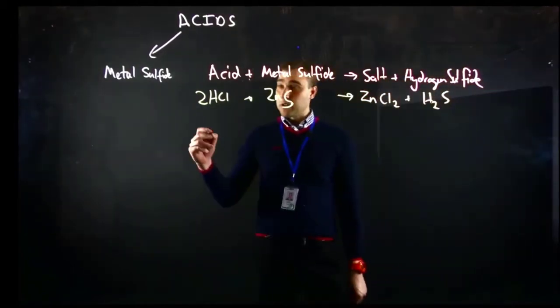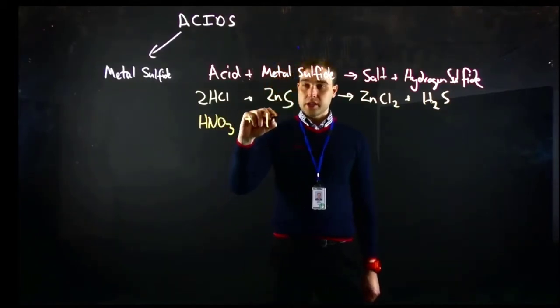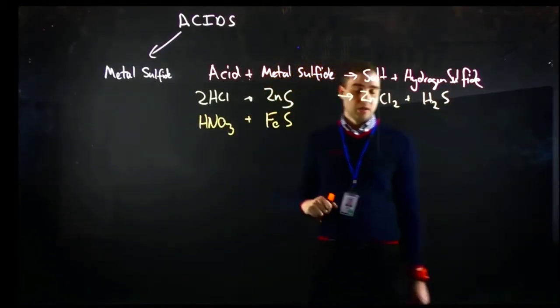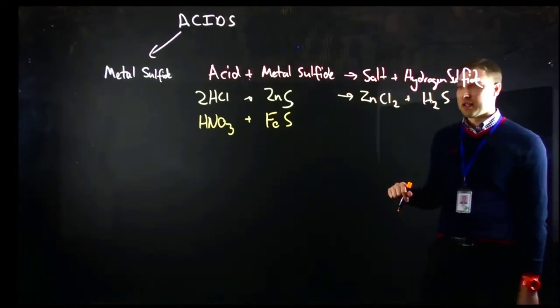In our next example we're going to react nitric acid with iron sulphide. So iron-2 sulfide, so ferrous sulphide that would be.